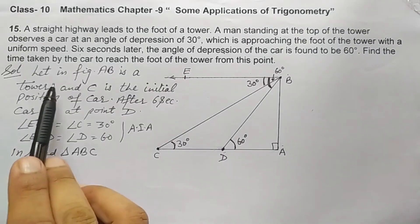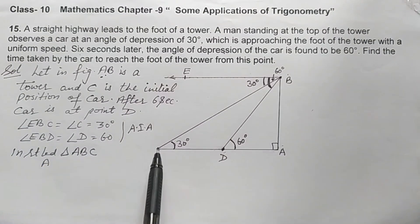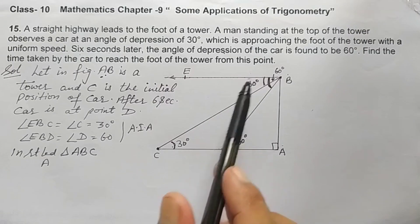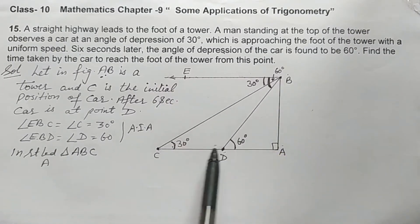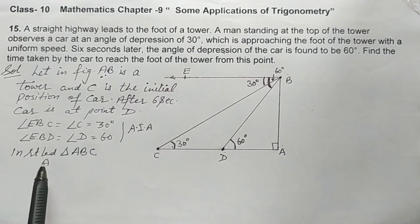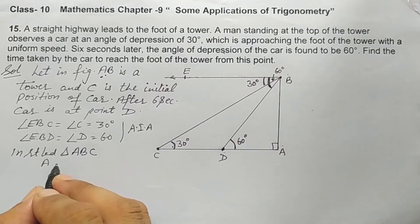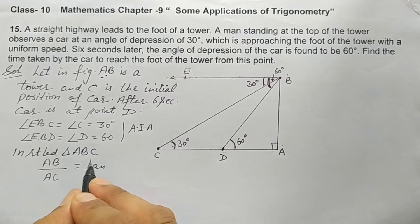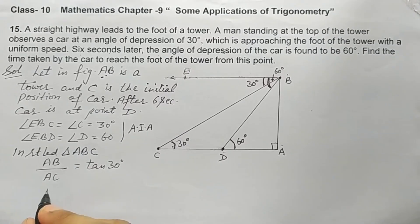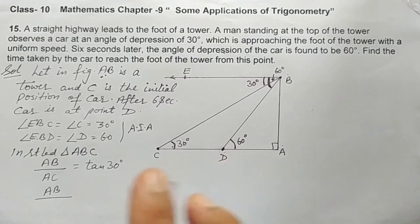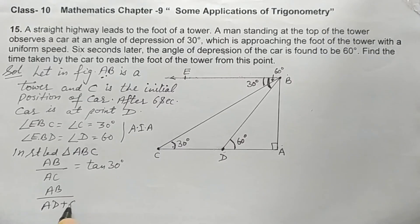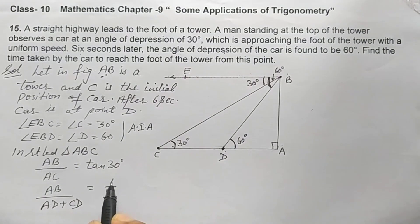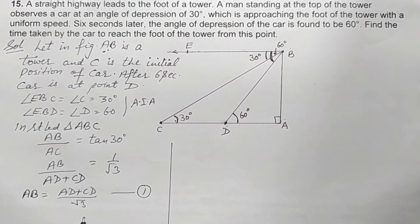Now, in right angle triangle ABC, we write AB over AC, which is perpendicular over base, equal to tan 30 degrees. So AB over AC equals 1 over root 3. Now AC can be written as AD plus CD. So AB over (AD plus CD) equals 1 over root 3. Cross multiplying, AB equals (AD plus CD) over root 3. This is Equation 1.